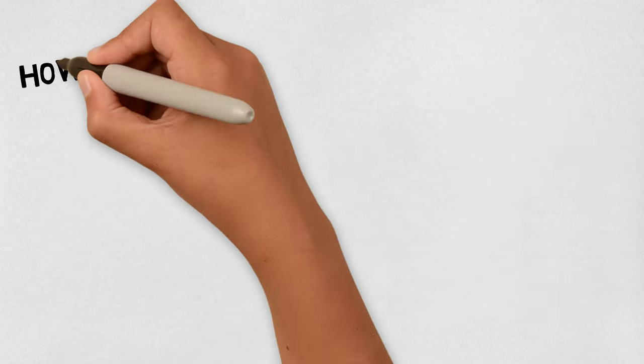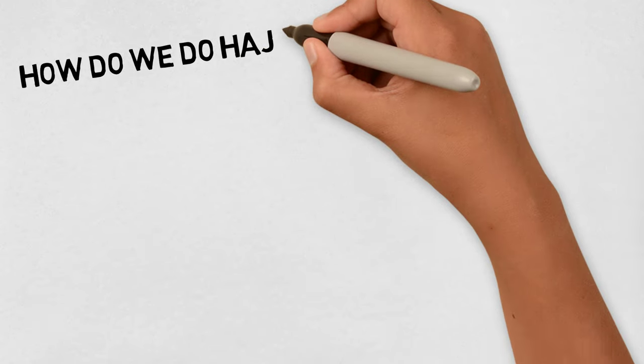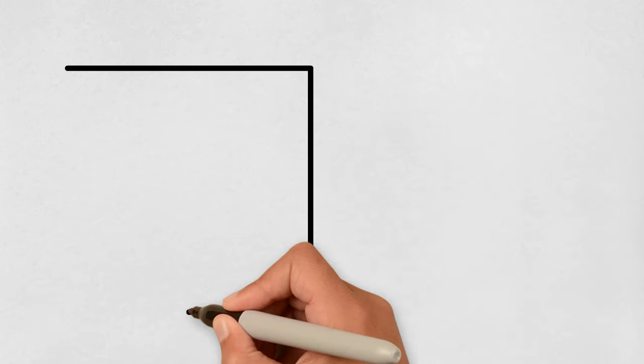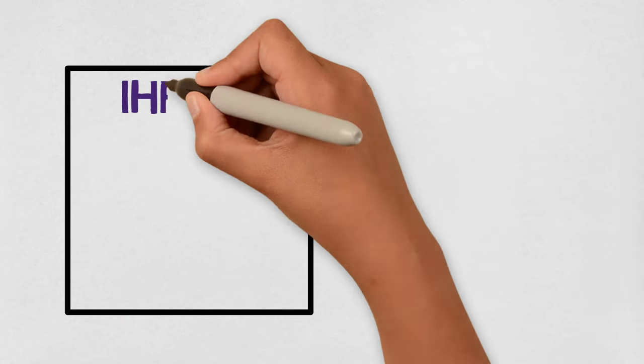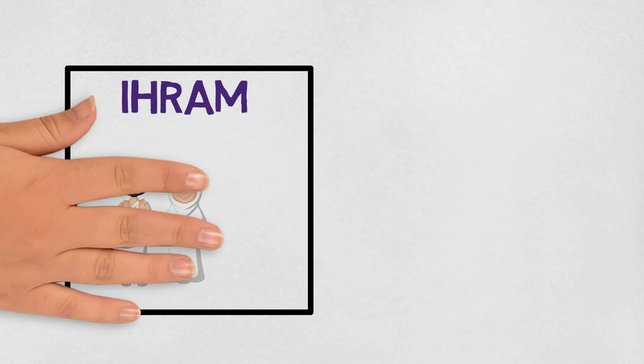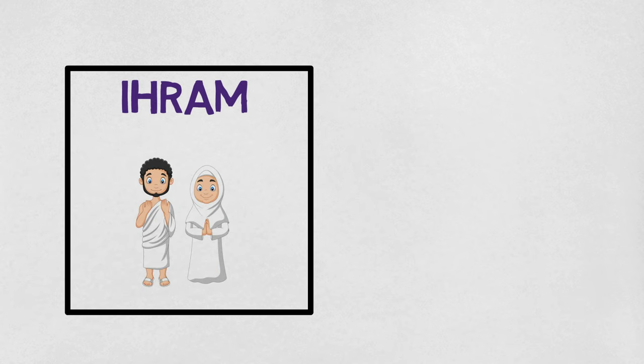How do we do Hajj? There are different stages of Hajj. The first is that the pilgrims must wear the correct clothes. Every Muslim, no matter where you come from or how rich or poor you are, we are all equal. Men wear white cloth and women wear fully covered clothing.